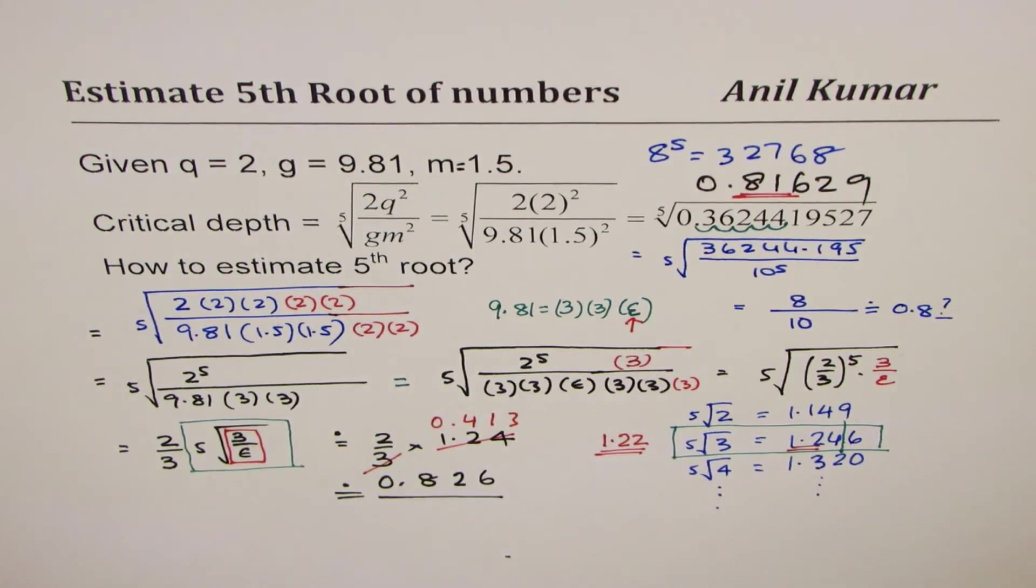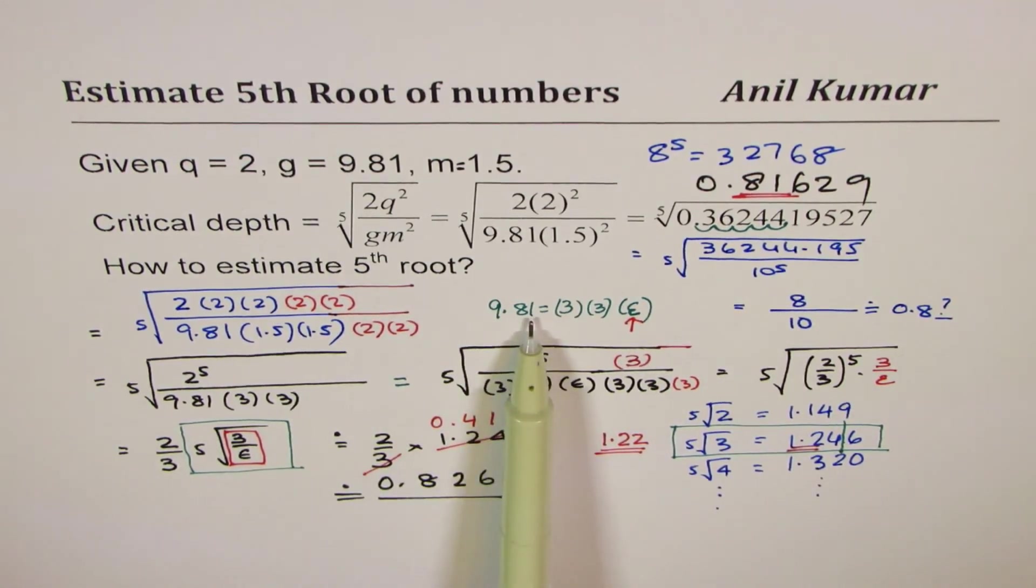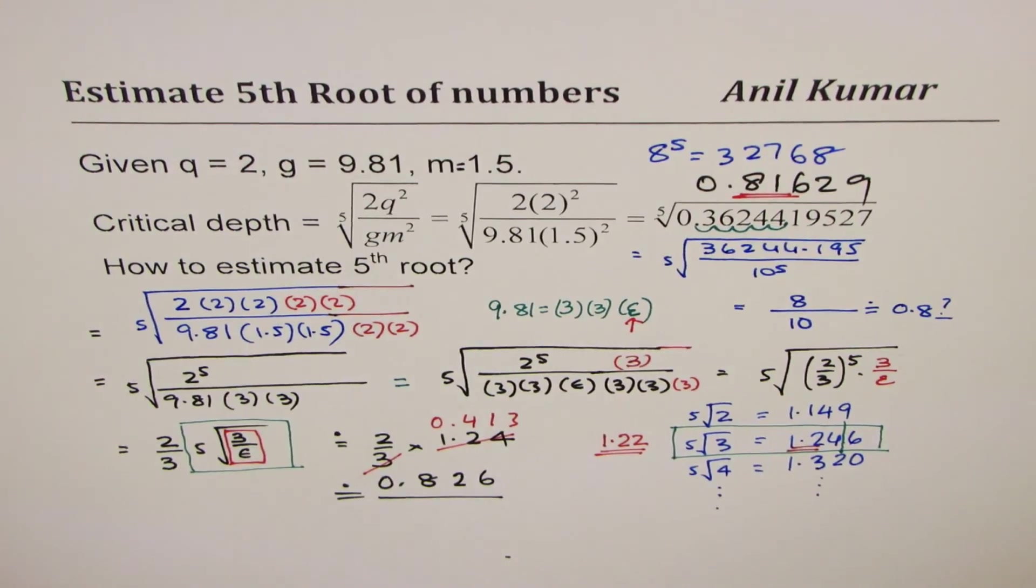But I hope with this you have a fairly good idea of approximating and estimating. So you have to work on this number 9.81, that gravitational force, how to round this up to get more accurate results. So with some practice, I think it should be very easy to find the fifth root for your examples. I hope that helps. Feel free to share your comments and views. If you like and subscribe to my videos, that would be good for me. Thank you and all the best.